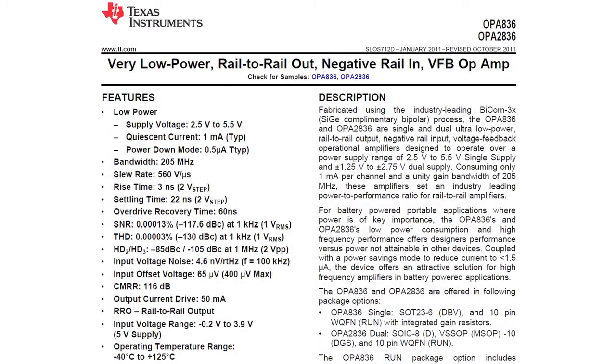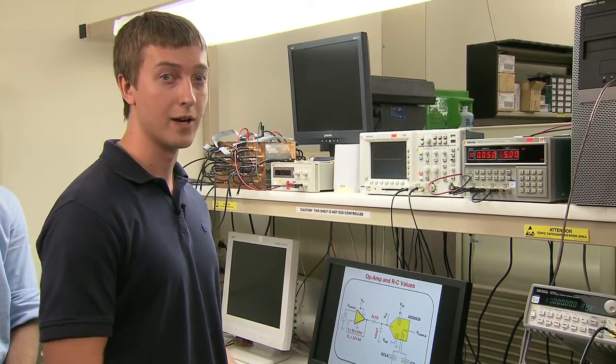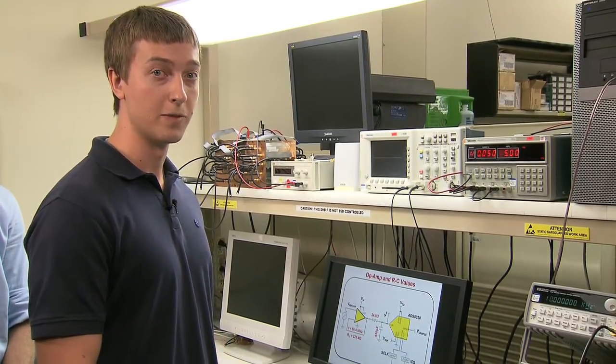So we'll probably want to use this in a unity gain configuration, and we'll want a negative rail in and a rail-to-rail out amplifier. Considering those parameters, the best option here would be the OPA836, which is a 200 megahertz operational amplifier with negative rail in and rail-to-rail output. It also has zero to five volt supply and one milliamp quiescent current — very low power when driving a SAR ADC and trying to preserve battery life.